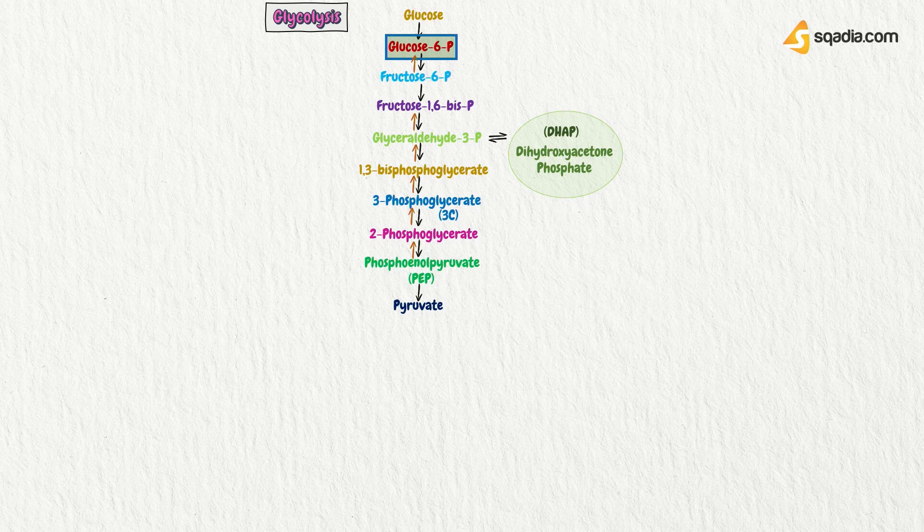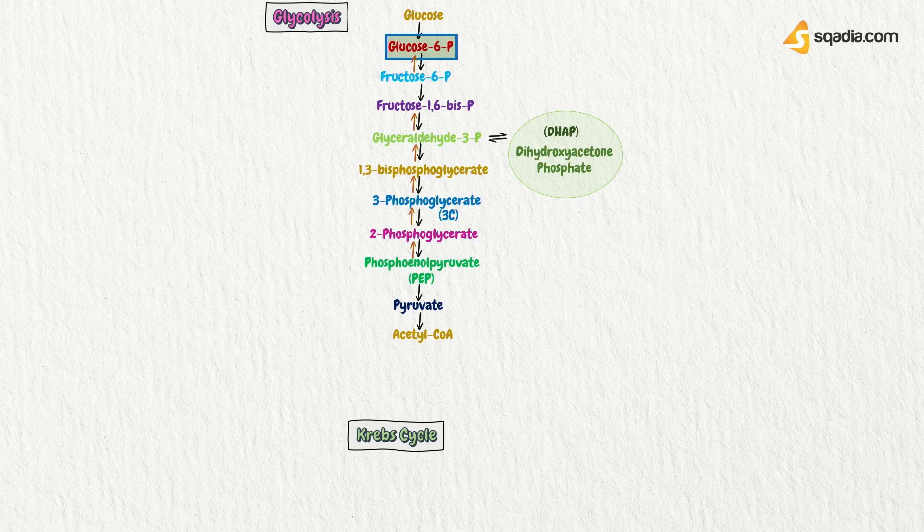Now, whole of this process is going on in the cytosol. After generation of pyruvate molecule, it is converted into acetyl coenzyme A. From here, the step undergoes Krebs cycle, and this occurs in the mitochondria.